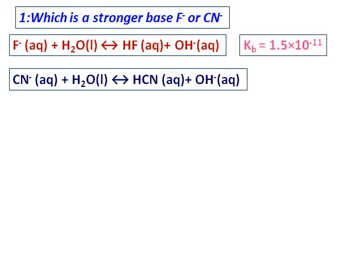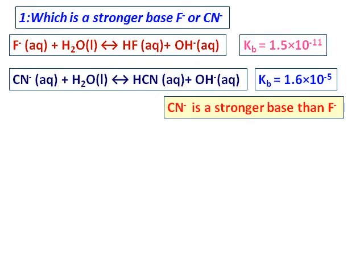And the Kb's of the two are given. So the best way to know which is the stronger base is to compare the Kb's. And you realize that Kb for cyanide, CN⁻, is larger. Hence, cyanide's reaction is more favored. Therefore, cyanide is a stronger base than F⁻.